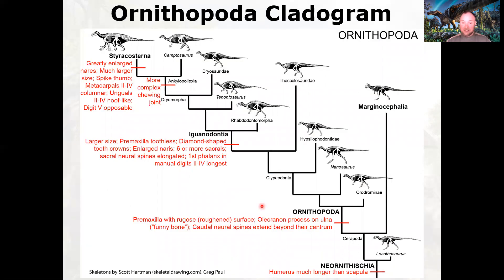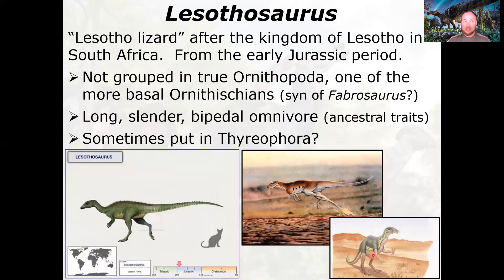Let's take a look at the Ornithopoda cladogram and walk through these different forms. We already talked about the Marginocephalia. We're going to start here with the basal form Lesothosaurus, which isn't really part of this group. Lesothosaurus means 'Lesotho lizard,' named after the Kingdom of Lesotho in South Africa — similar to how the Vatican and San Marino are separate little kingdoms within larger countries.